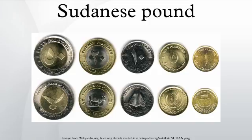Banknotes of the third pound are similar in style to those of the second pound, but with changes in color scheme, the removal of certain symbols associated with the South, and a redrawn map of the country after the secession of the South.